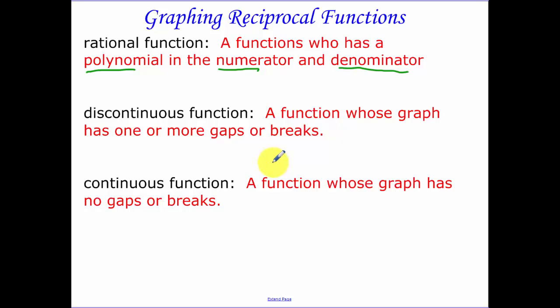Now a discontinuous function is a function whose graph has one or more gaps or breaks. So our reciprocal function is going to have some gaps or breaks. One of those is going to be an asymptote. We're going to have both a vertical and a horizontal asymptote. When we get into later functions, we're going to have gaps. We're going to have holes in our functions.